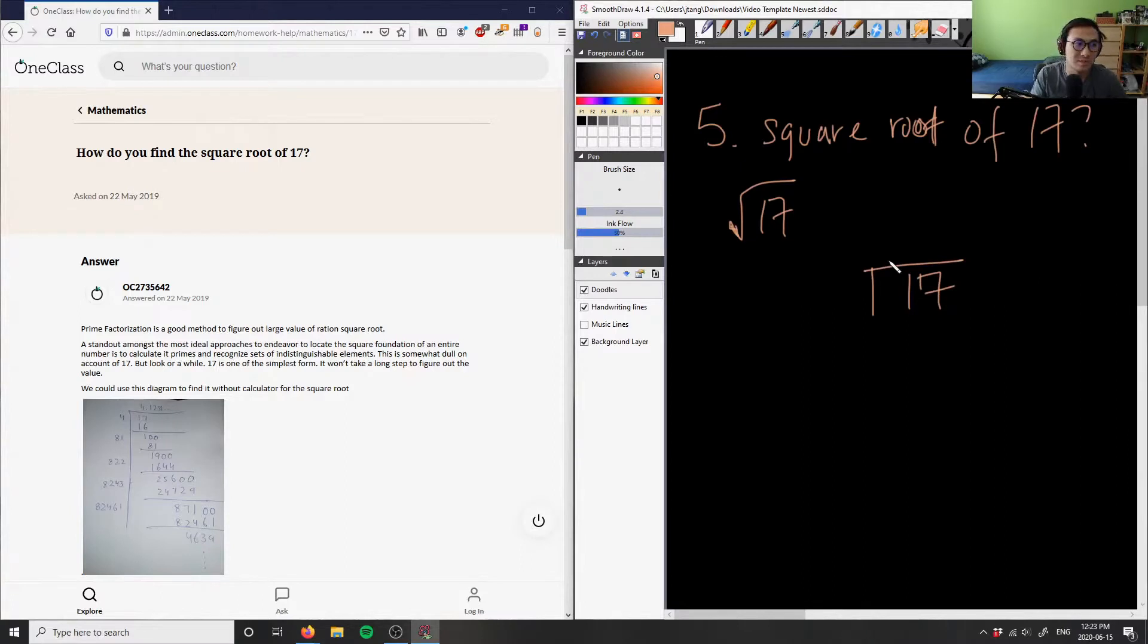Two numbers squared closest to 17, I'd pick 4 because 4 squared is 16. So we have 4, 4 here. 4 squared is 16. Subtract both sides, 17 minus 16 is 1. I can add two zeros, and then I can double this 4, and this becomes 8.